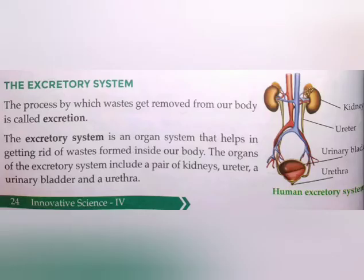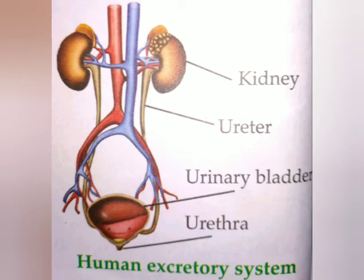Next is the excretory system. Our excretory system helps to remove waste from our body. It is very essential to get rid of waste formed inside our body. Our excretory system includes a pair of kidneys, ureters, a urinary bladder, and a urethra. All these organs have different functions.